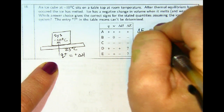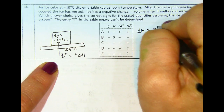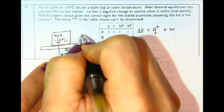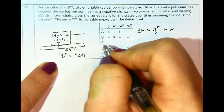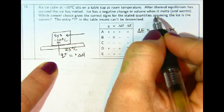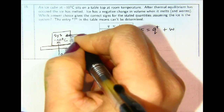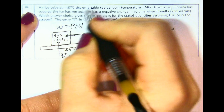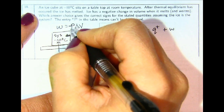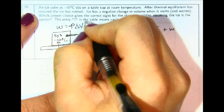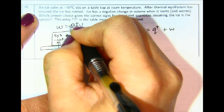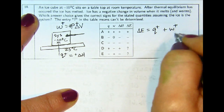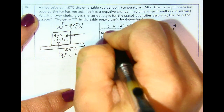To find delta E, we need the sign of work. We're told there is a negative change in volume when ice melts. Using the equation W equals negative pressure times delta V, and since pressure is constant, a negative delta V means negative times negative equals a positive value for work. Because work is positive and Q is positive, delta E must be positive, making the answer A.